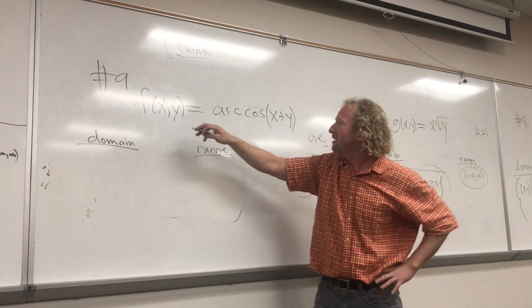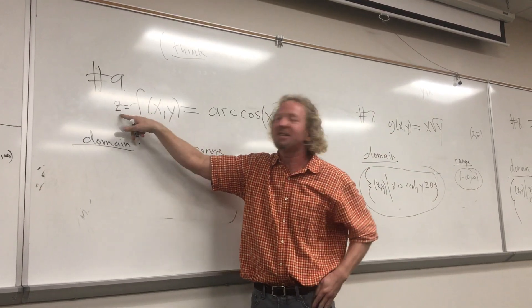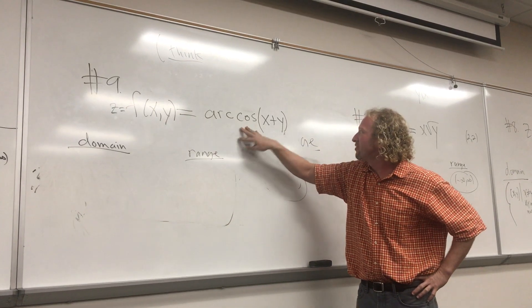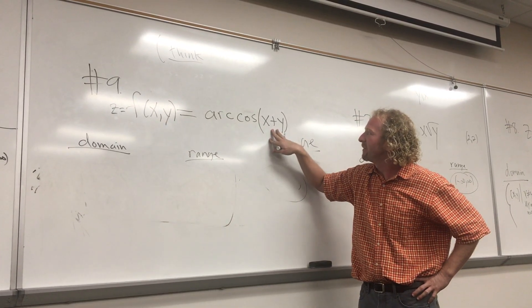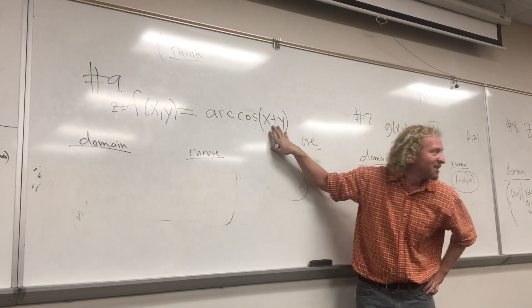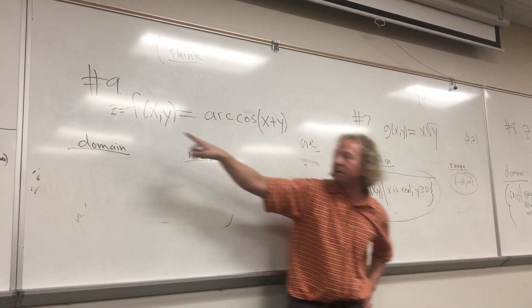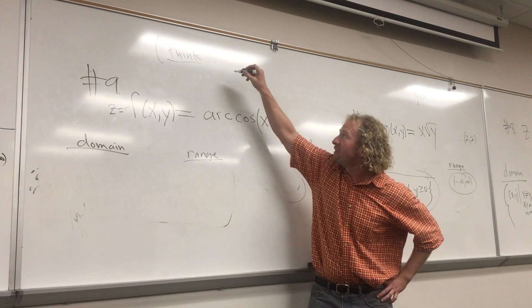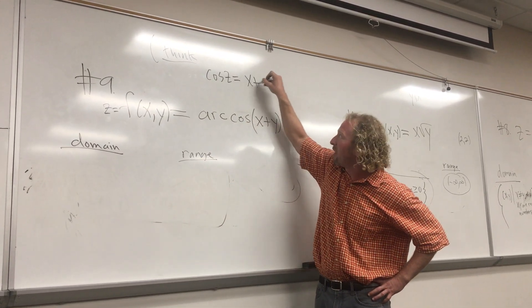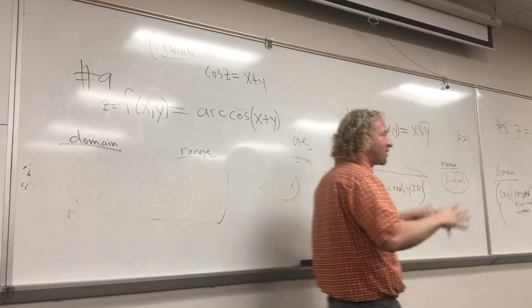So that's like your z. That's in the range. So z is equal to the arc cosine of x plus y. Right? So the arc cosine takes x plus y and sends it to z. So the cosine function takes z and sends it back to x plus y. Right? That's how it works.